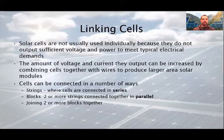Solar cells are not usually used individually because they do not output sufficient voltage and power to meet typical electrical demands. We know already that the common single junction silicon solar cell can produce a maximum open circuit voltage of approximately 0.6 to 0.7 volts. But that is not enough for anything. The amount of voltage and current output can be increased by combining the cells together with wires to produce larger area solar modules. Cells can be connected in a number of ways, strings for example, where cells are connected in series, then blocks, where two or more strings connected together in parallel, and finally joining two or more blocks together.